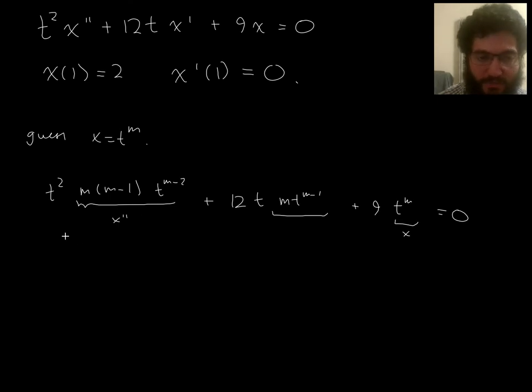And then an overall factor of t to the m can be divided out, like we saw in the general setup. So you're just going to get m, m minus 1, plus 12m, plus 9, equals 0. Then simplify a little bit. So this is m squared minus m plus 12m plus 9 equals 0. So m squared plus 11m plus 9 equals 0.